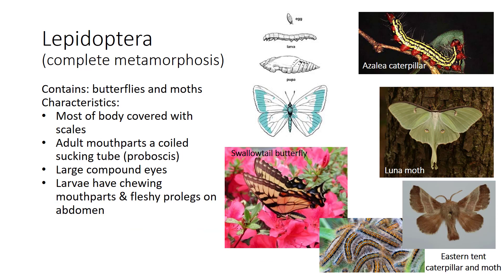Order Lepidoptera means scale wing, referring to the many scales which cover the wing's surface. It includes butterflies and moths. Other characteristics include a proboscis which sucks nectar and large compound eyes. The adults are pollinators while the larvae feed on plants — some caterpillars cause significant damage in a short time. The larvae have chewing mouthparts and fleshy prolegs on their abdomen. In conclusion, several orders of insects affect plants either in a harmful or beneficial way. In order to create an IPM program, you must carefully identify the pests and determine if there are beneficials as well.